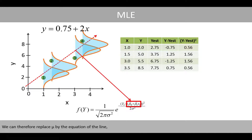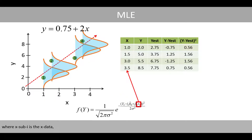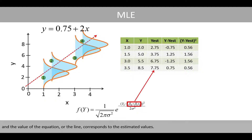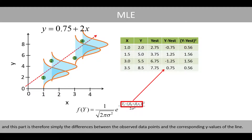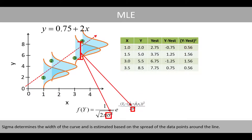We can therefore replace mu by the equation of the line, where x_i is the x-data and the value of the equation of the line corresponds to the estimated values. y_i is the observed y-data, and this part is therefore simply the differences between the observed data points and the corresponding y-values of the line. Sigma determines the width of the curve and is estimated based on the spread of the data points around the line.